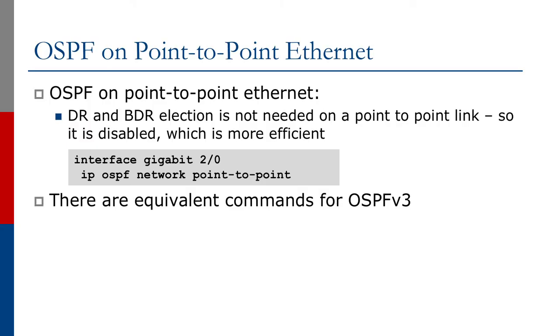To operate OSPF on a point-to-point Ethernet link, we don't actually need a designated router and backup designated router since there are only two devices. So we disable the DR and BDR election, which is much more efficient. We go to the interface and use the keyword 'ip ospf network point-to-point' to convert this to a point-to-point link as far as OSPF is concerned. Note that both devices on either end of the point-to-point Ethernet need the configuration command to be supplied. There are equivalent commands for OSPFv3.